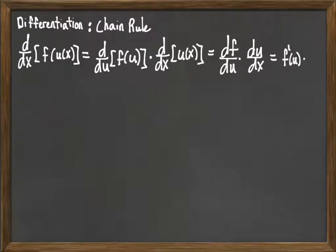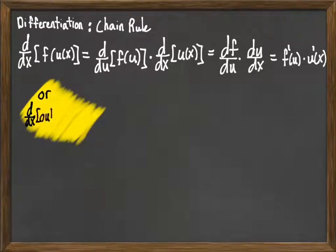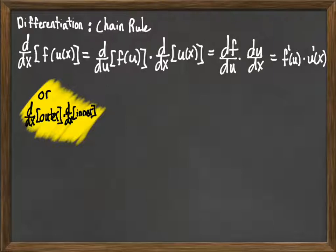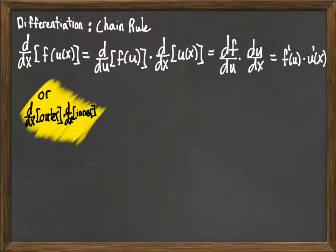Another way to think of that is f prime of u times u prime of x. One way to think of it is we're looking at the outer function — we work our way from the outside in. We take the derivative of the outer function, whatever operation that is, with respect to that quantity or expression. And then we multiply times the derivative of the inner function. That's how the chain rule works.